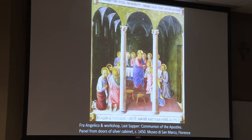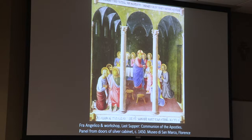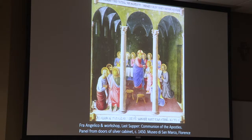It's not clear whether Fra Angelico knew the Holy Land firsthand, but there had been friars who traveled there and wrote accounts of pilgrimage sites, so he may have had some knowledge. The vaulted architectural setting is typical of Florence in this period.